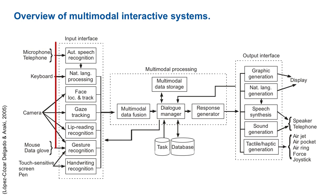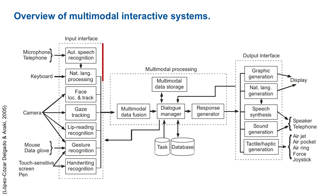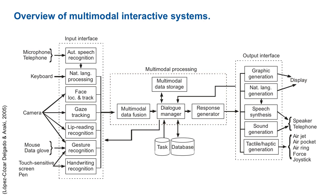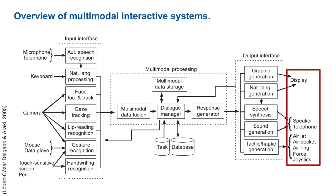On the left-hand side, you see different devices which can be used to access information through different physical channels and to serve as an input to the input interface. The input interface is the mechanism behind these devices which makes use of that information and translates it into semantically meaningful pieces of information which can be processed by an interactive system. In the middle of the picture, you see the multimodal processing units. And on the right-hand side, you see different output interfaces, again being connected to different devices giving access to the physical channel. On the other side of this physical channel, you have to imagine the human user of such a multimodal interactive system.